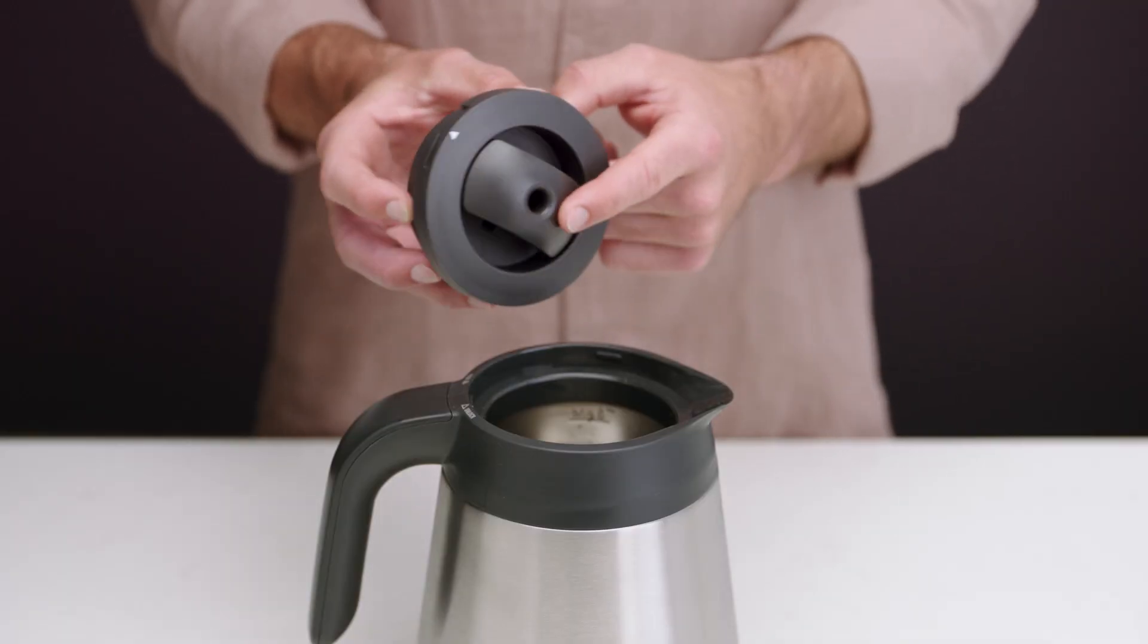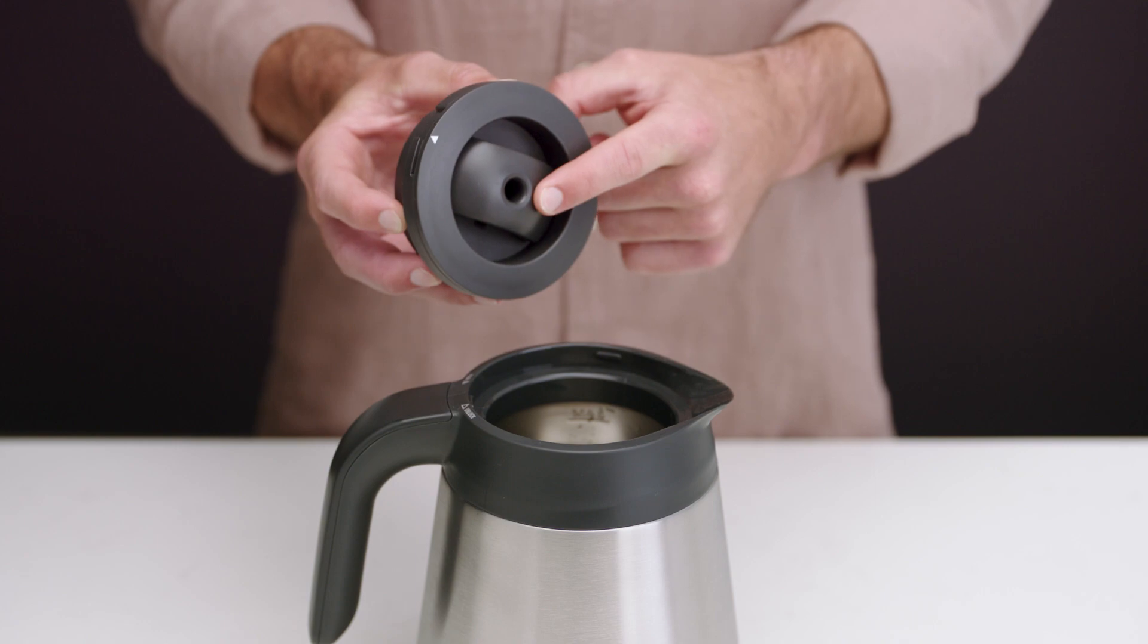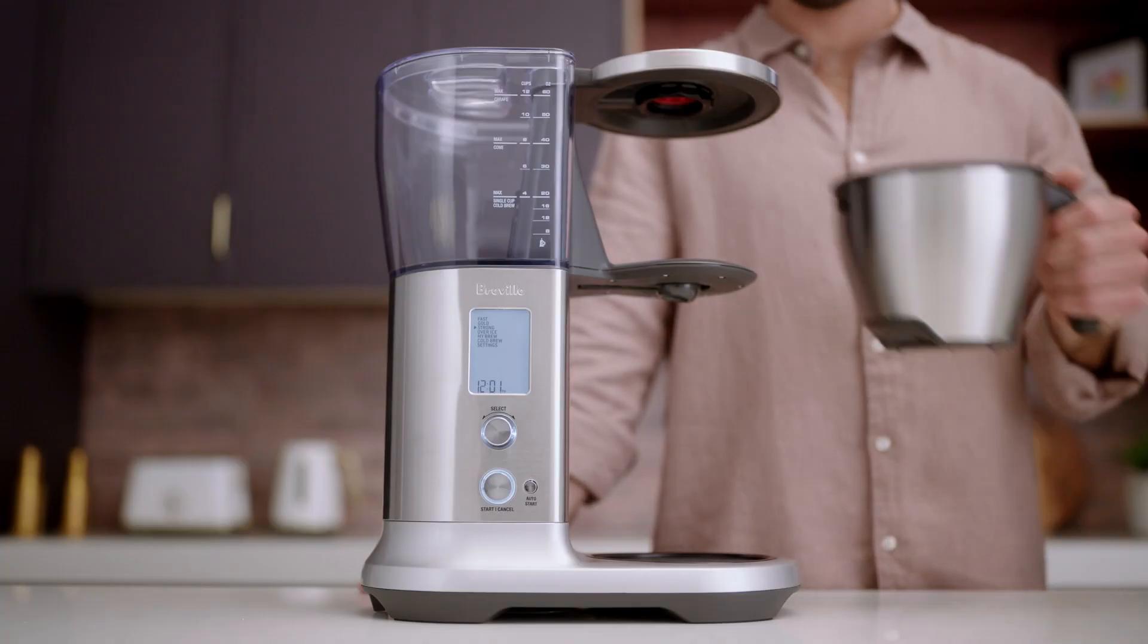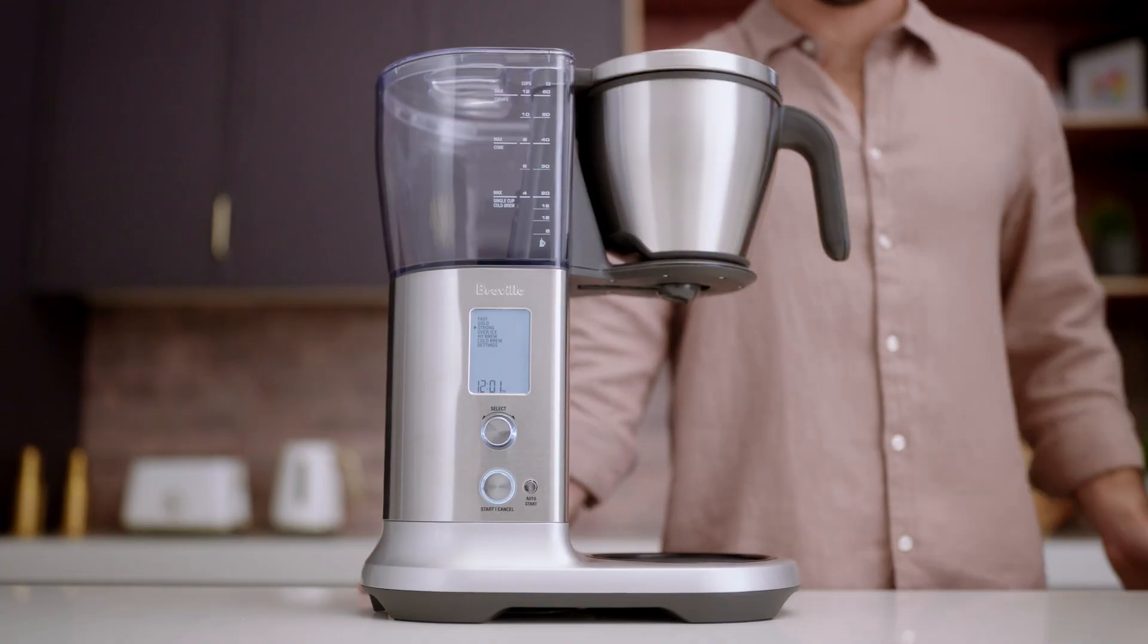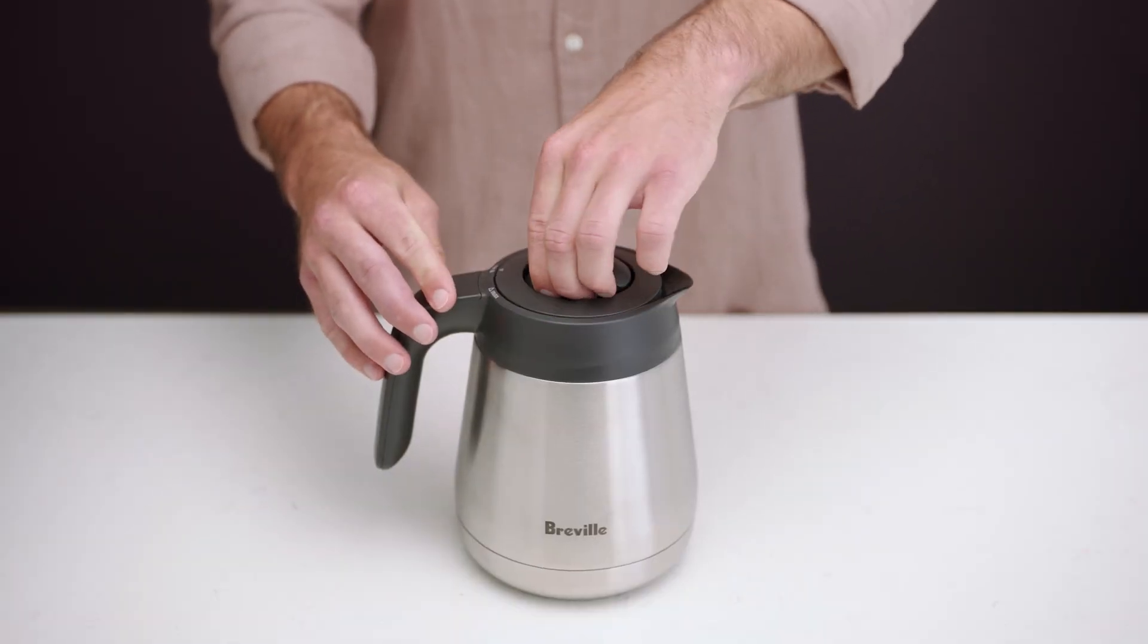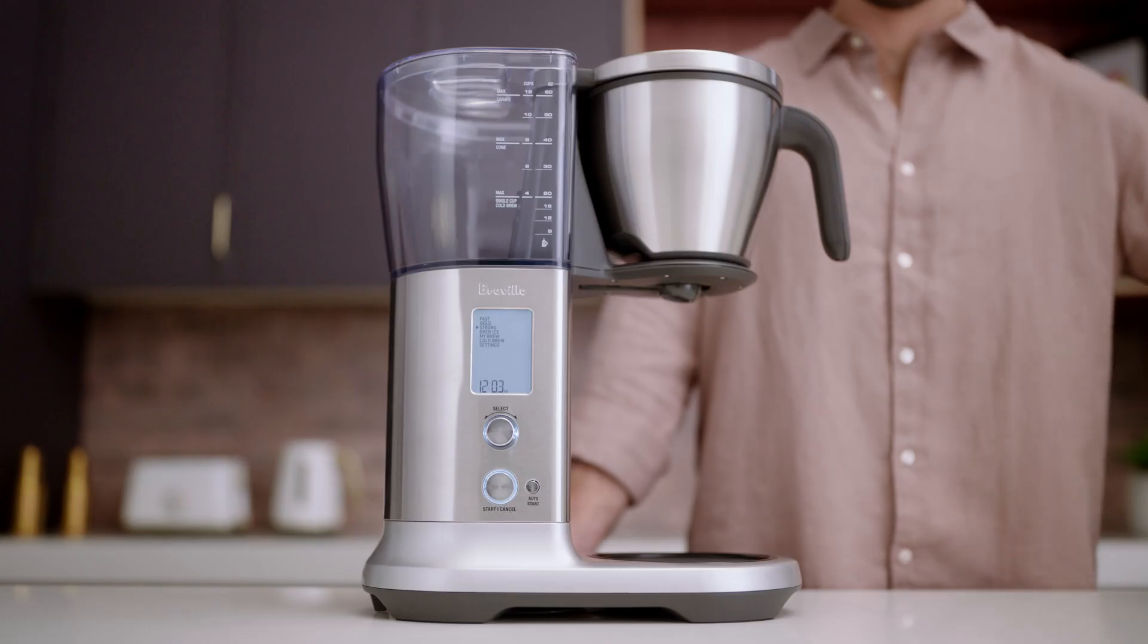Press the carafe drip stop to ensure it moves freely. Grab the coffee basket and carafe. Ensure they're both empty and pop on the carafe lid before inserting them into the machine like this.